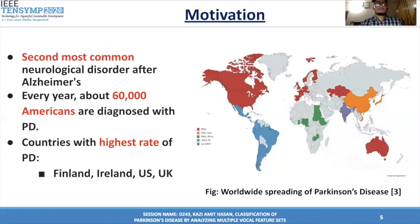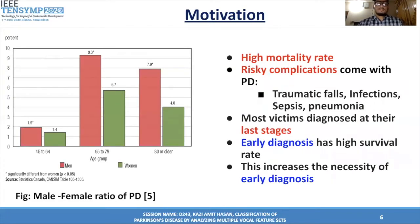Now the motivation part — what drives us to work in this field. Parkinson's Disease is the second most common neurological disorder after Alzheimer's. Every year, about 60,000 Americans are diagnosed with it. You can see the geographical heat map of PD-affected people. Countries like Finland, Ireland, the US, and UK have the highest rates. The bar chart shows that people from 65 to 79 years of age, both male and female, are at risk. It also has a high mortality rate and risky complications like traumatic falls, infection, sepsis, and pneumonia. Most victims are diagnosed at the last stages, but if we diagnose them at early stages, we can help them survive.